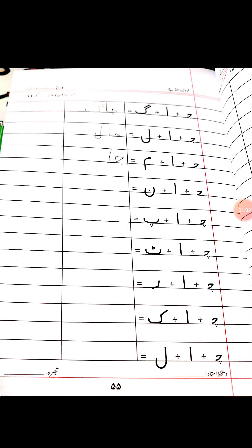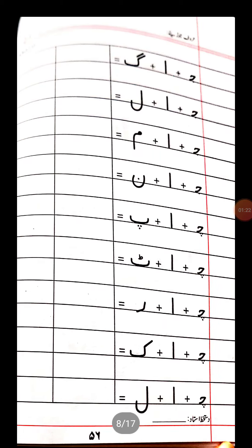Meem with lam sakin: jaal. Meem with meem sakin: jaam. Meem with noon sakin: jaan. Che with pe sakin: chaap. Che with te sakin: chaat. Che with re sakin: char. Che with gaaf sakin: chaak. Che with kaaf sakin: chaak. Ja with lam sakin: jaal. Pages 95 and 96 are your CW.